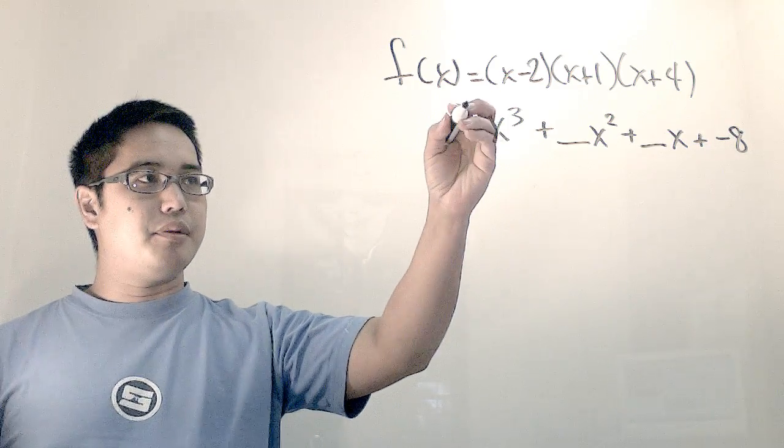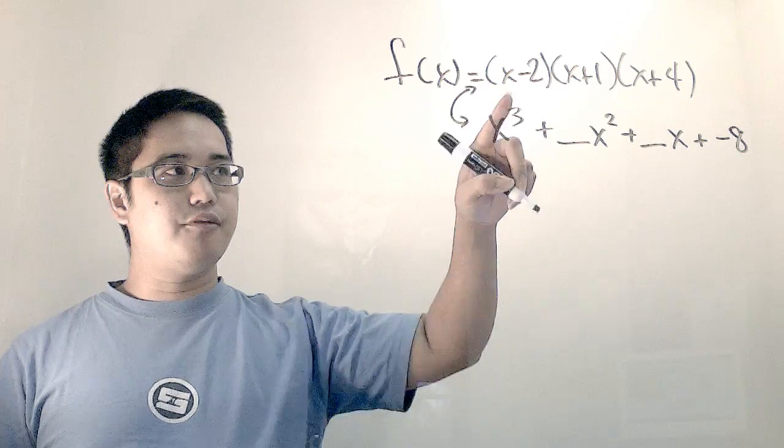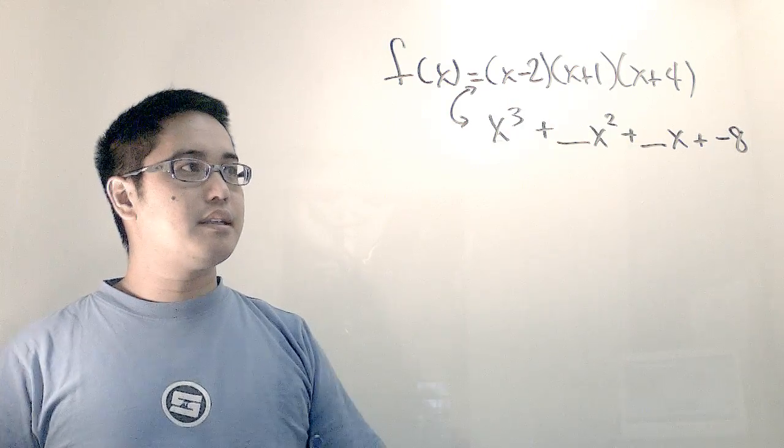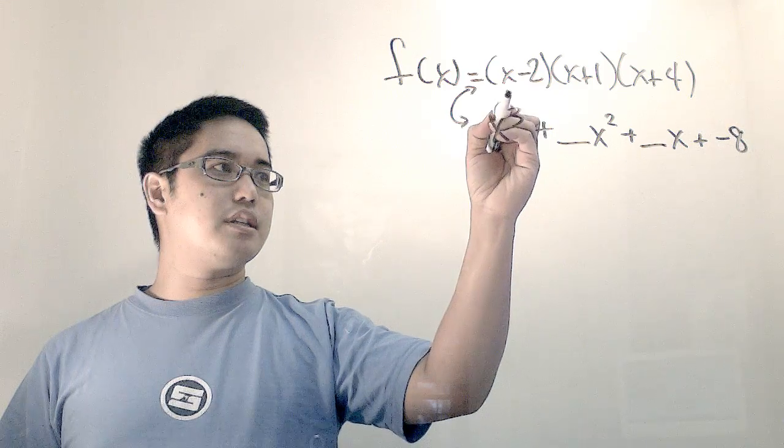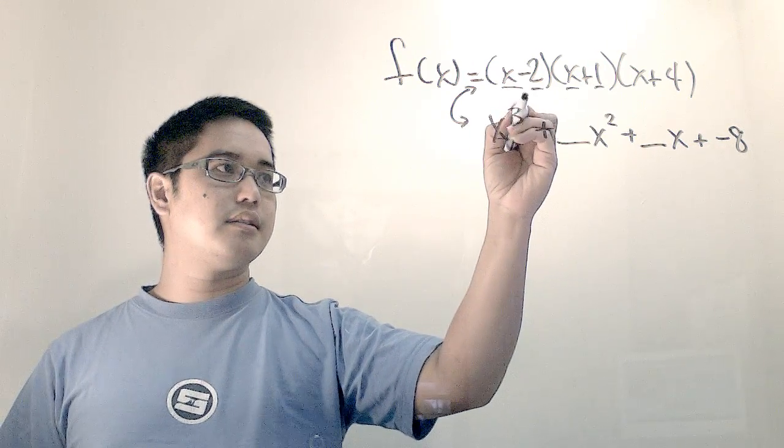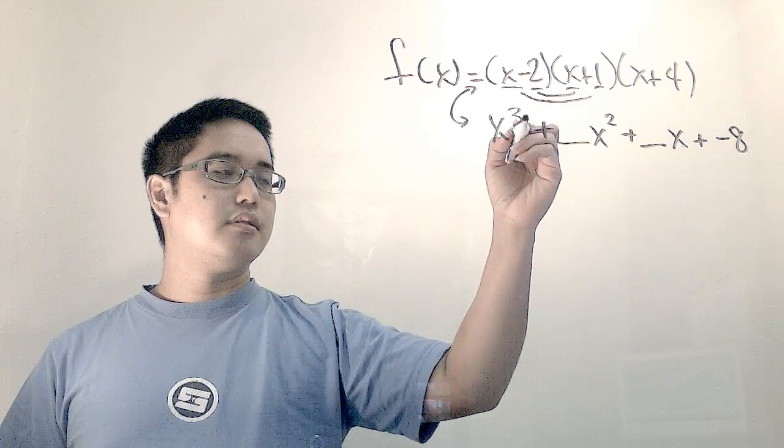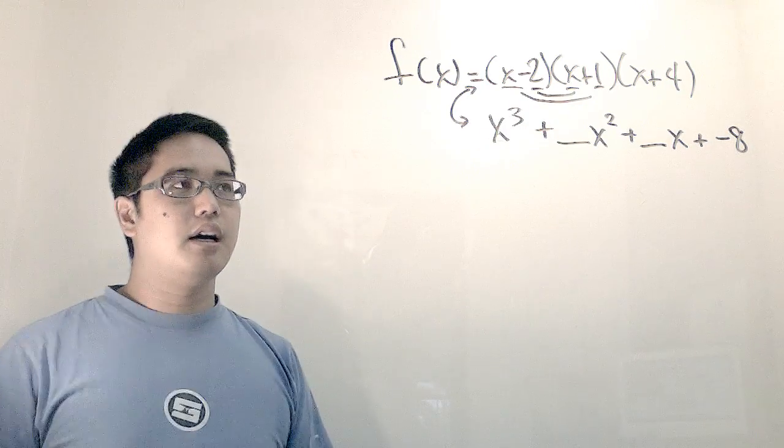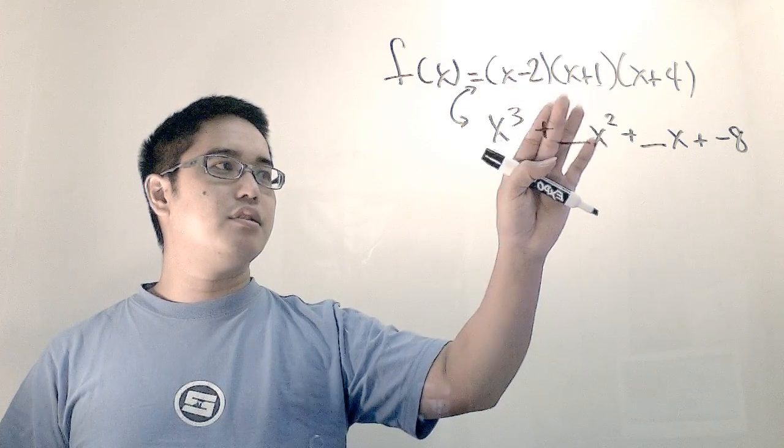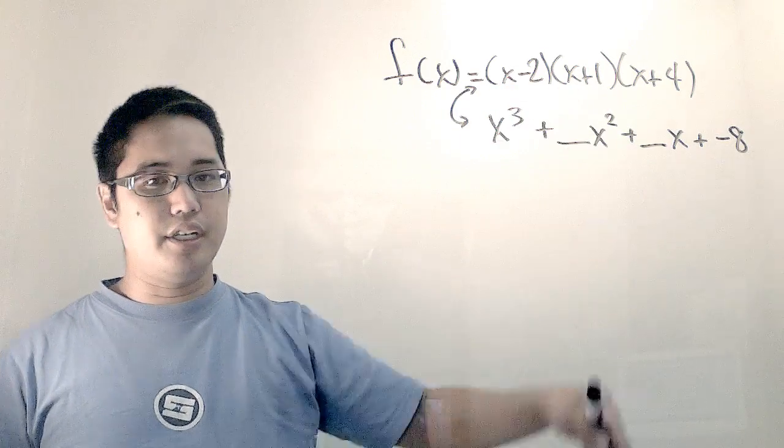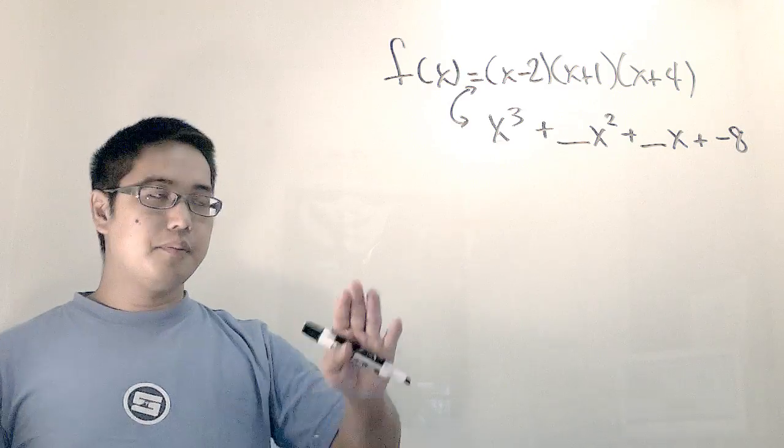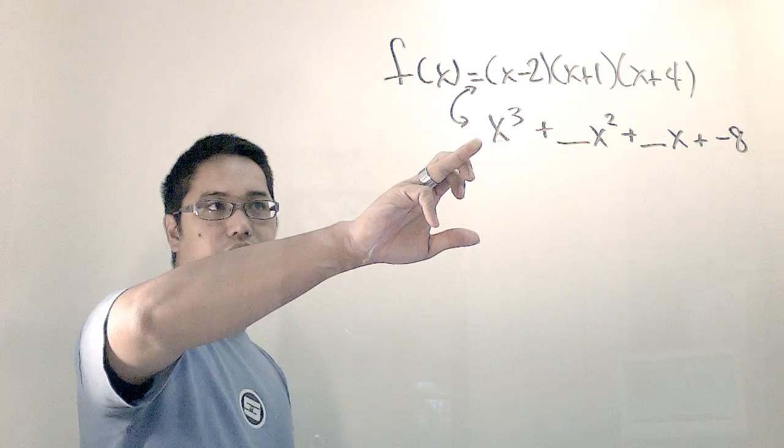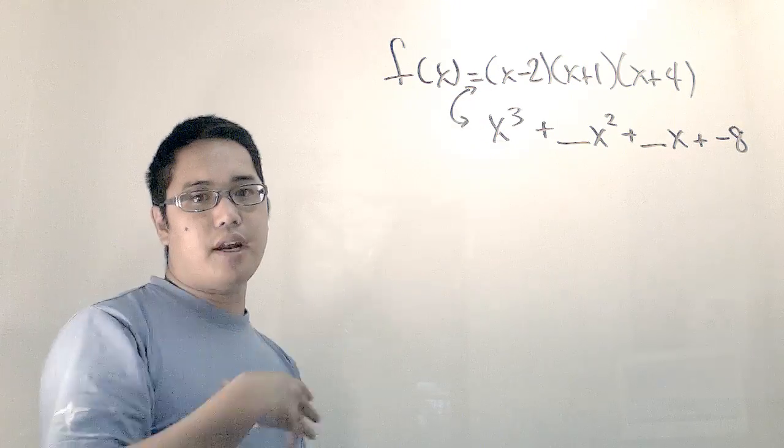In order to get from here to here, I would simply have to foil this out. I would have to foil it twice though, because usually foil is just first, outer, inner, or last. But this time there's three of those things, so you would actually have to foil that and then foil it again. This right here is called standard form. This right here is called factored form.